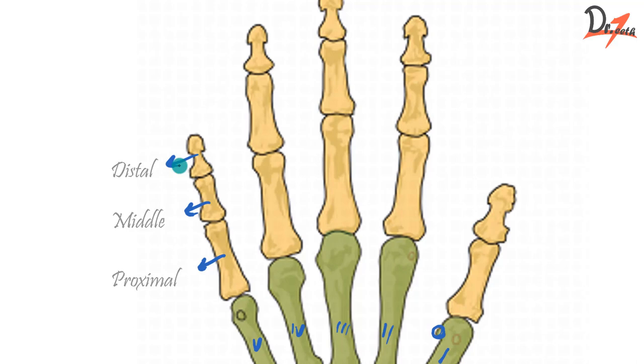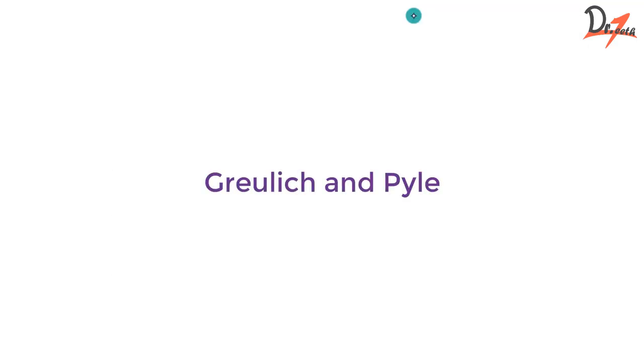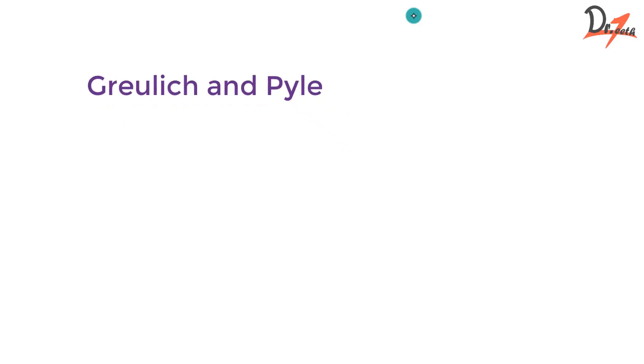Now that we have hopefully understood the bones of the hand wrist, let us proceed to the various methods. The first method is the Greulich and Pyle method.